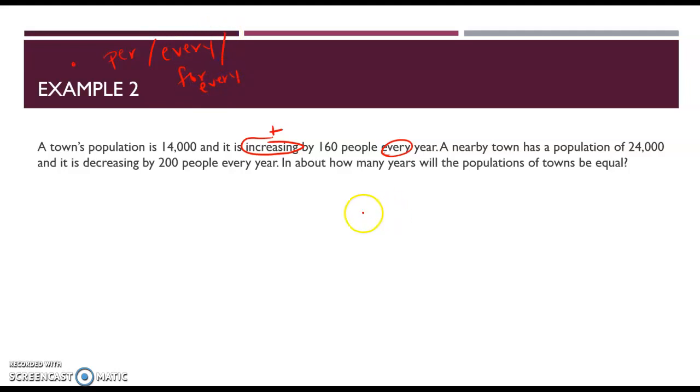So we know that this is multiplying. A nearby town has a population of 24,000 and is decreasing. So that's going to be subtracting by 200 people every year. So that's another multiplication. And about how many years will the populations of the towns be equal?